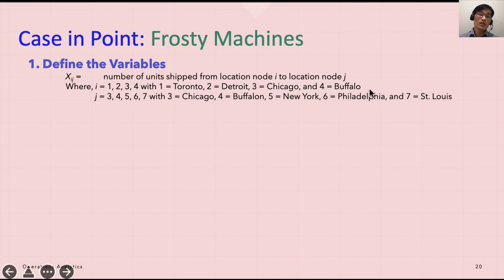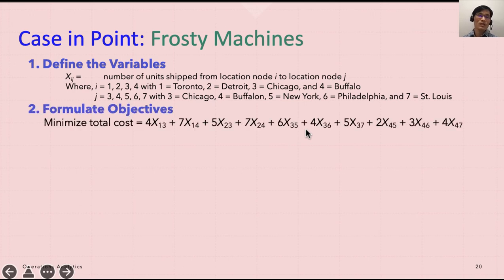And we have Toronto and Detroit, and notice that I include Chicago and Buffalo because it's also shipping some items from there to the other locations such as New York, Philadelphia, and St. Louis. Now J is 3, 4, 5, 6, 7. I am including 3 and 4 again here because Chicago and Buffalo are included here as destinations. They can receive shipments from Toronto and Detroit. So this transshipment problem includes these two cities both in the source and destination. That's the difference that we have to look at.